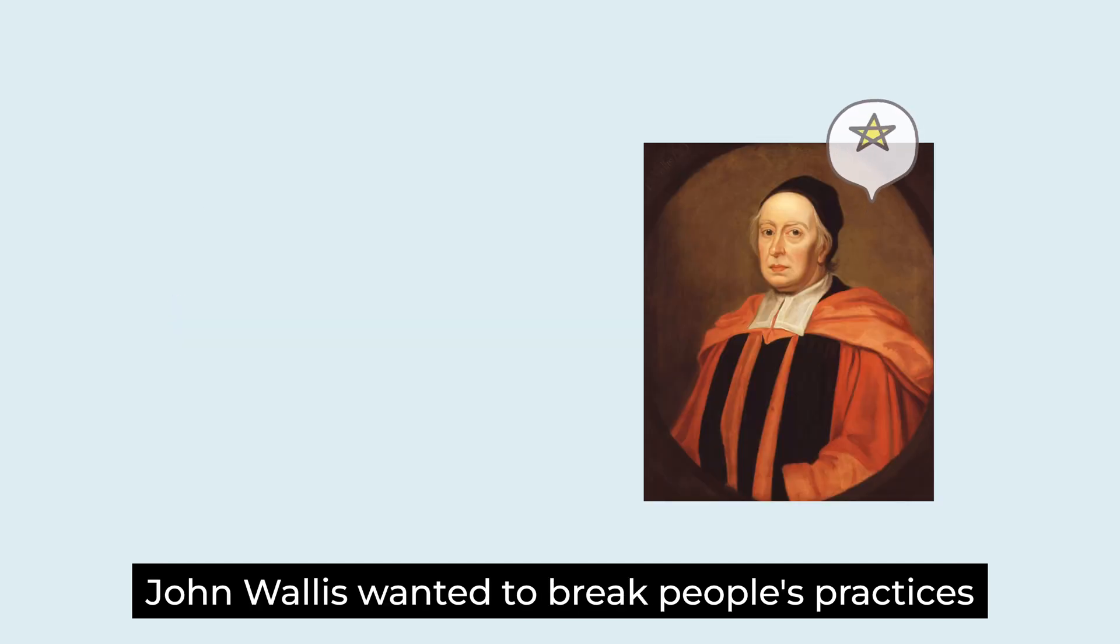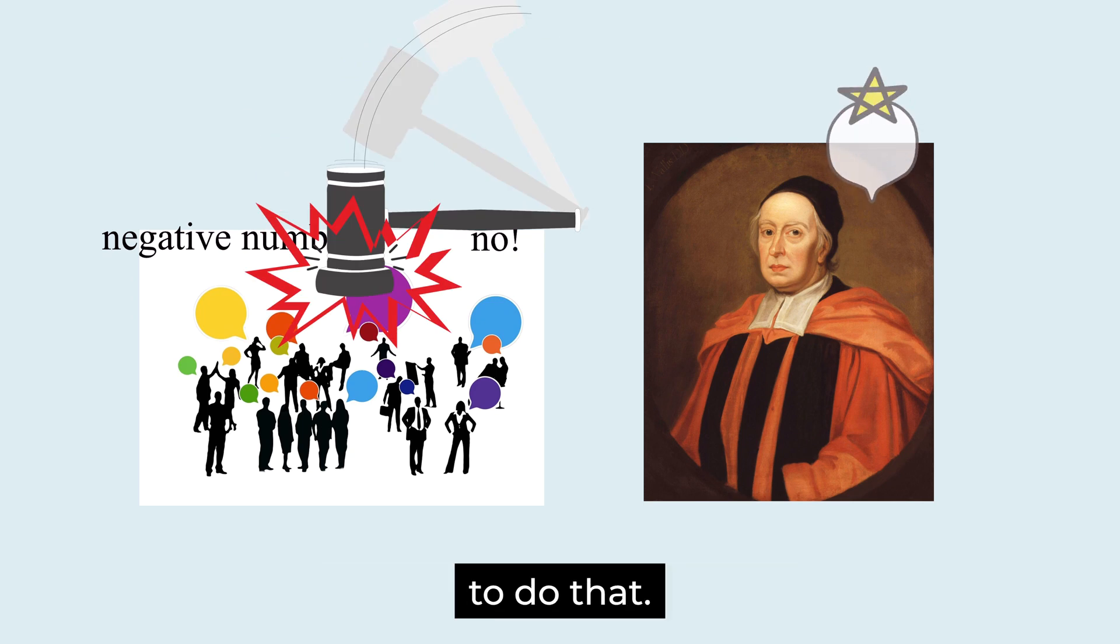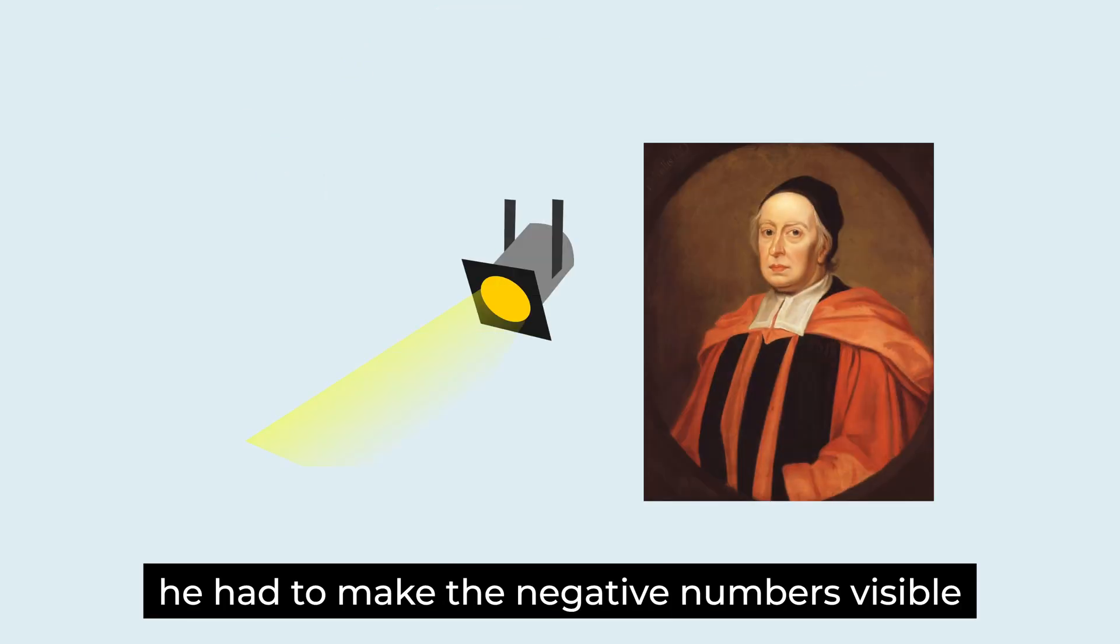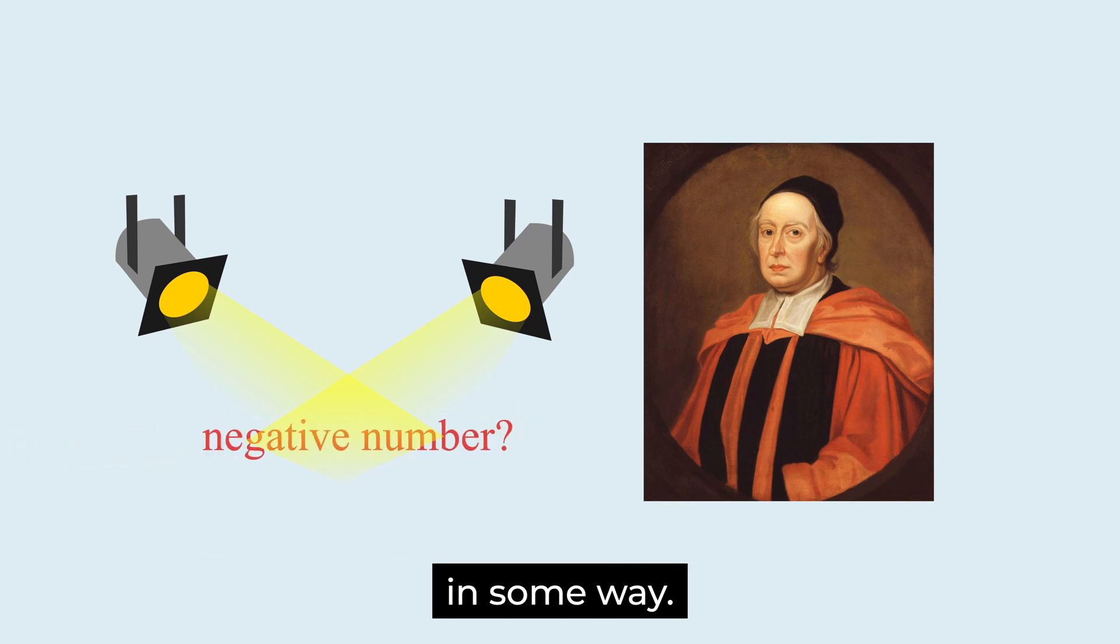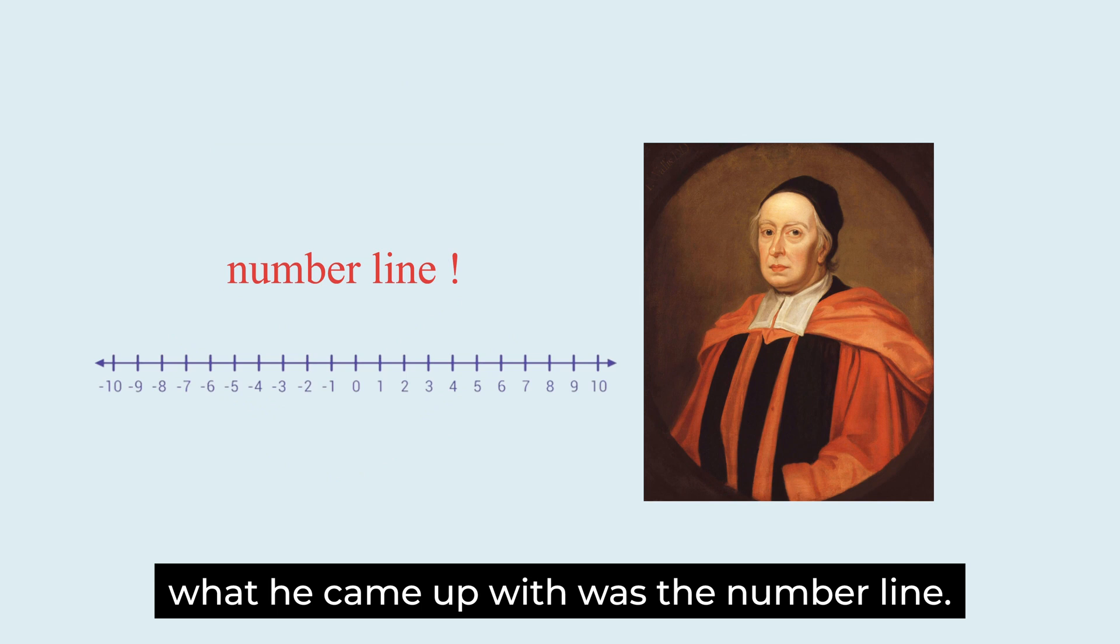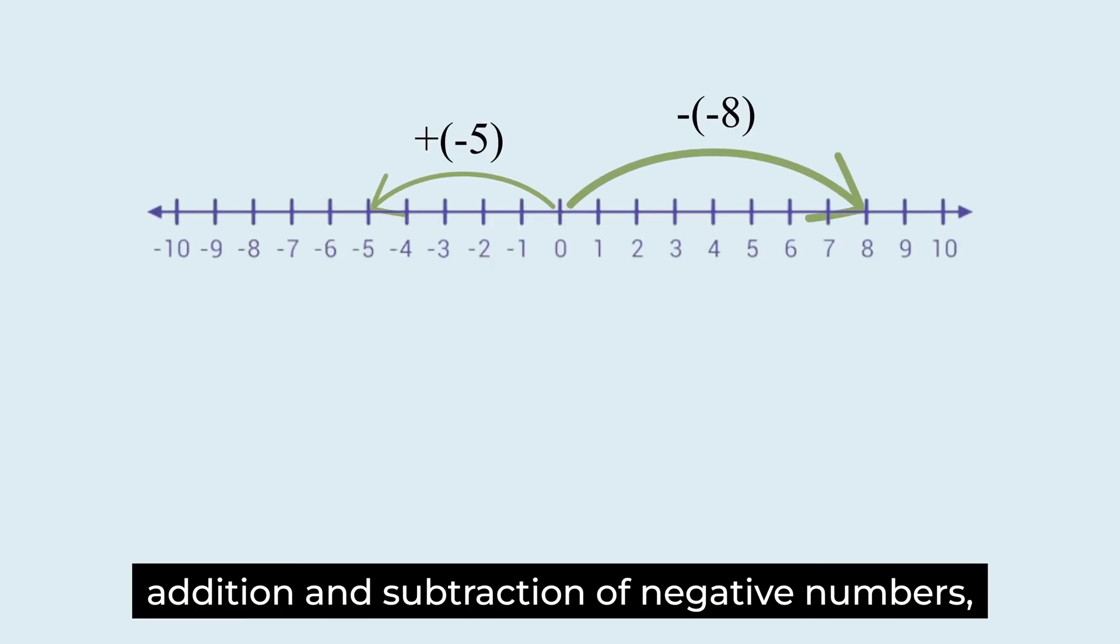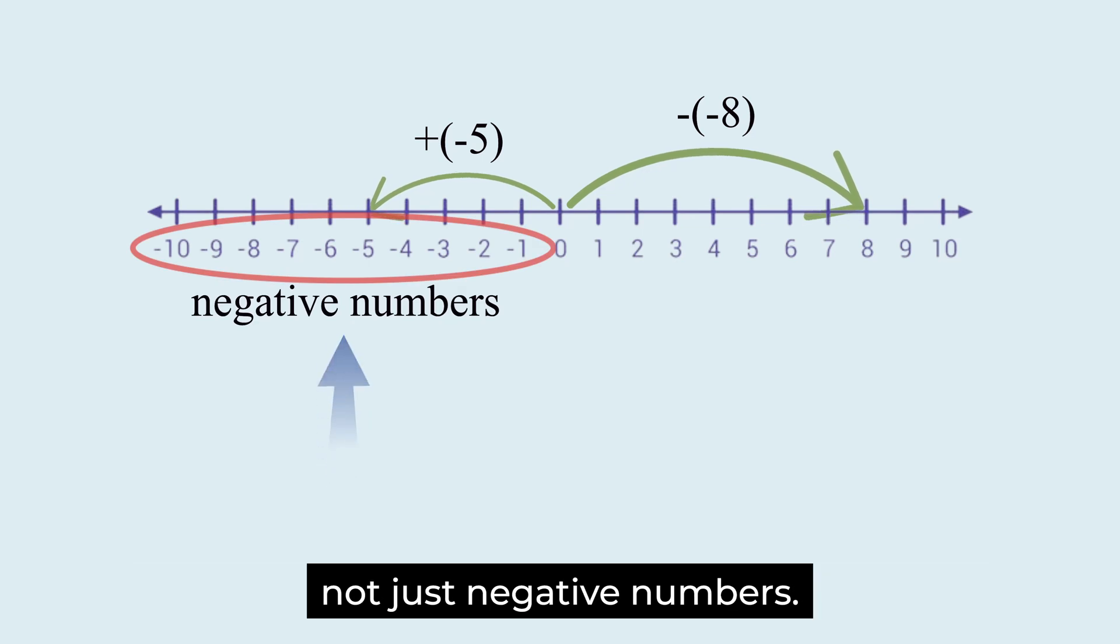John Wallis wanted to break people's prejudices about negative numbers. To do that, he had to make the negative numbers visible in some way. After much thought, what he came up with was the number line. The number line could show addition and subtraction of negative numbers, not just negative numbers.